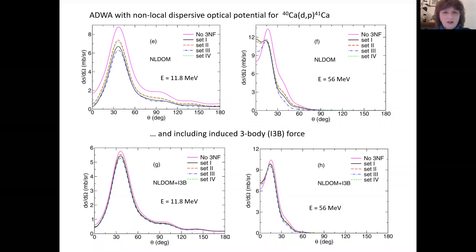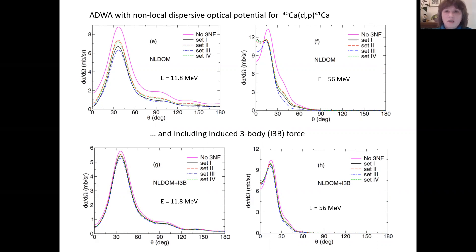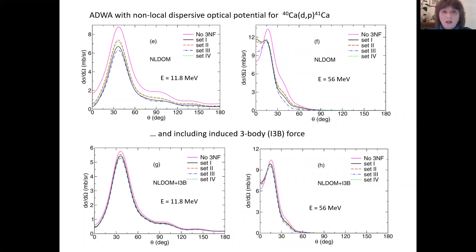This result was obtained within the adiabatic model, which treats breakup but not completely. For local potentials, the adiabatic model is a reasonably good approximation, but for non-local potentials it is not, and ideally one would go beyond adiabatic using non-local potentials — though no such tool currently exists. For local potentials, the obvious way to go beyond adiabatic is to use CDCC, where including three-nucleon force is relatively straightforward.